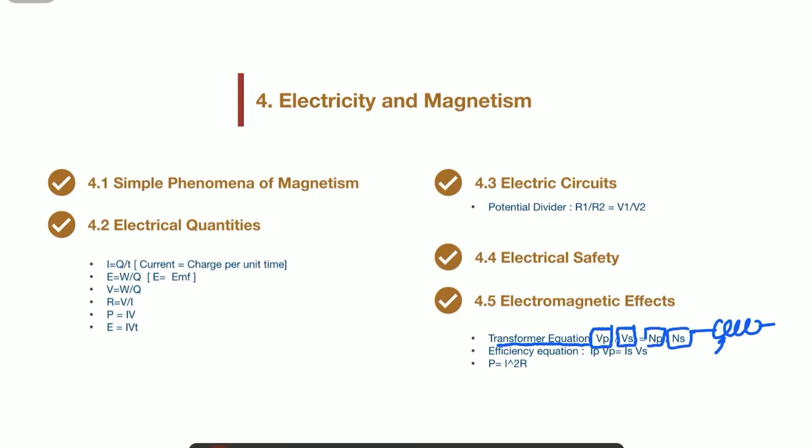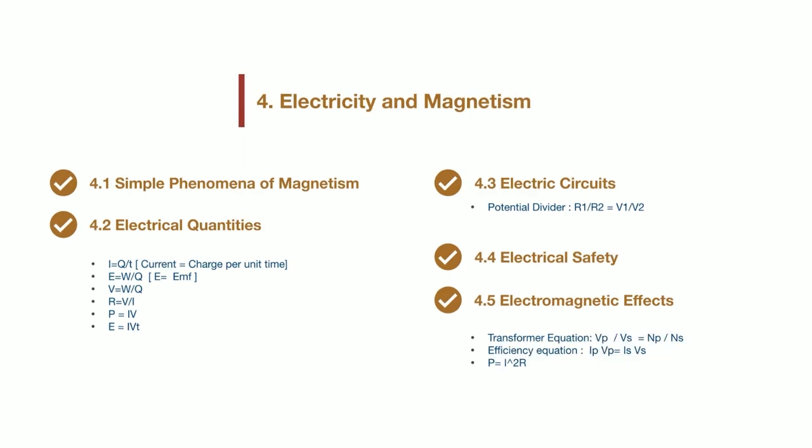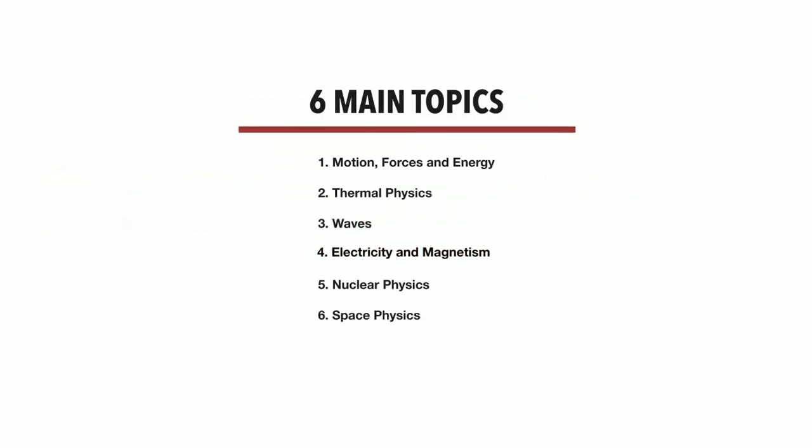Next up, we have the efficiency equation. This formula helps us determine the efficiency of a transformer based on its primary and secondary currents and voltages. And lastly, you've got the formula for the power dissipation calculation, whereby P equals to current squared multiplied by resistance. And that wraps up our chapter 4, moving on to chapter 5.